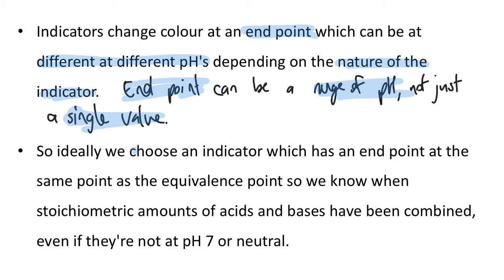Ideally, we choose an indicator which has an end point at the same point as the equivalence point. We look at the salt produced — whether it's going to be acidic, basic, or neutral — and pick the indicator which has an end point that matches. We need stoichiometric amounts to do the calculations, so if we don't get this right, our calculations are not going to be right.